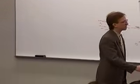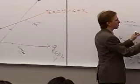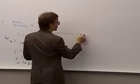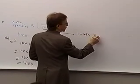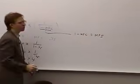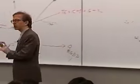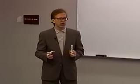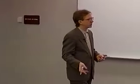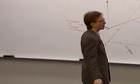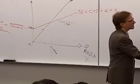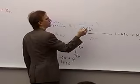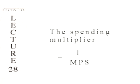The formula for the multiplier — 1 over (1 minus the MPC) — that's also equal to 1 over the marginal propensity to save. The MPC plus the MPS equals 1, so 1 minus the MPC equals the MPS. So the multiplier can also be written as 1 over the MPS.